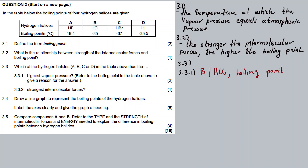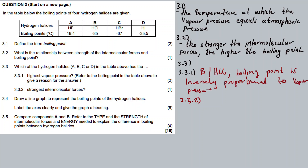Question 3.3.2: the stronger the intermolecular force, the higher the boiling point. So which one has the strongest intermolecular forces? It's the one with the highest boiling point. Our answer is A — hydrogen fluoride.